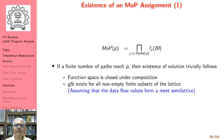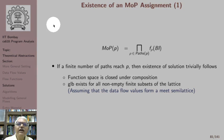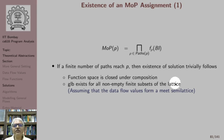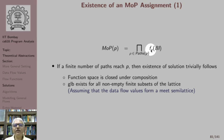What guarantees that an MOP assignment can exist? MOP is defined as a meet over all paths when a path flow function is applied to boundary information. If a finite number of paths reach P, then the existence of the solution trivially follows, because GLB exists for non-empty finite subsets of the lattice, assuming the data flow values form a meet semi-lattice. The function space is closed under composition, so F_rho is defined for every rho.